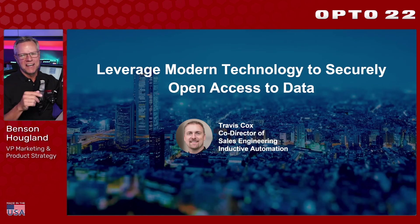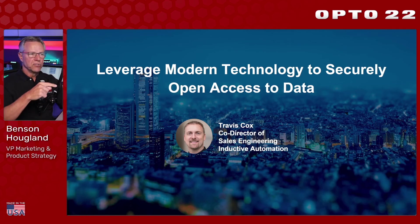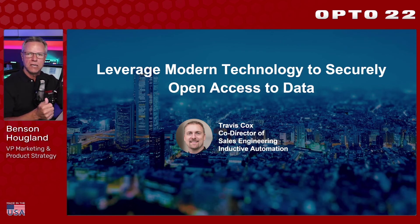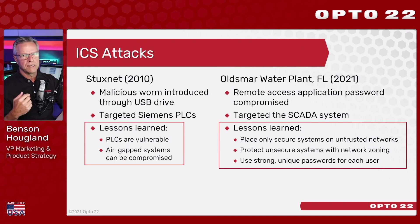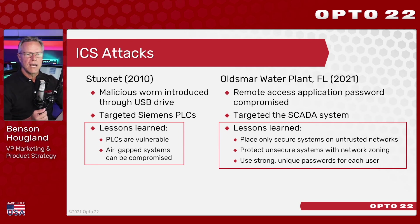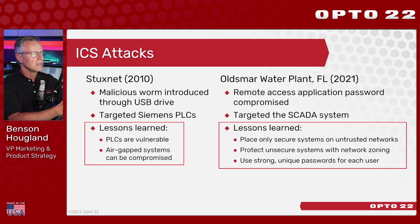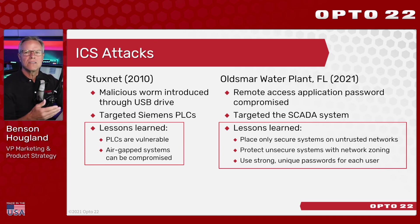In a previous CSIA master class, Travis Cox from Inductive Automation presented a webinar on leveraging modern technology to securely open access to data. Travis did a brilliant job, and I highly suggest going back and viewing it on CSIA's website. In the next few slides I'll reiterate some of his key points. One of the issues we're trying to solve is ICS attacks — industrial control system attacks. We're all familiar with Stuxnet, and then the more recent Oldsmar water plant in Florida. PLCs are vulnerable — they weren't built for today's open networks, yet they're being asked to connect, so we have to protect them.